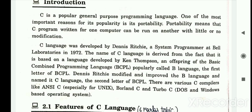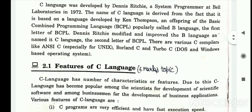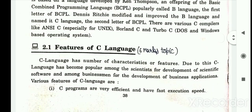Now let's look at the features of C language. C programs are very efficient and have fast execution speed. So the first feature is speed and efficiency.